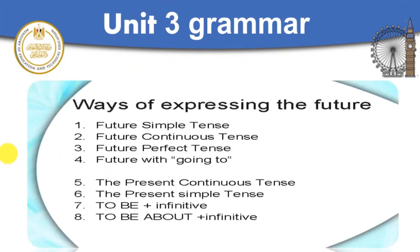This is the grammar of Unit 3. It's about how to express the future. We have different ways to express the future: the future simple tense, future continuous, future perfect, and future with going to. We also have other sentences we can use to express the future, like the present continuous, the present simple, verb to be plus infinitive, and to be about plus the infinitive. Let's check them one by one.